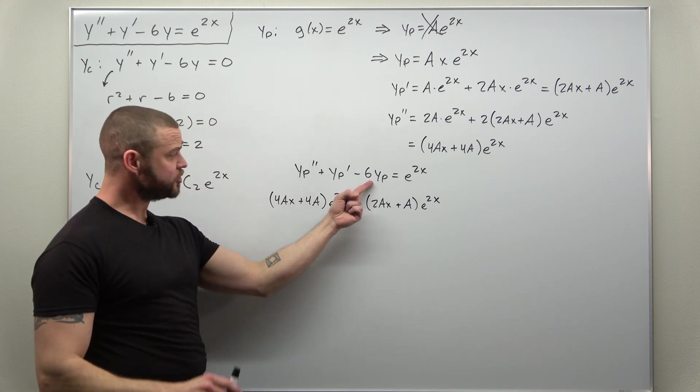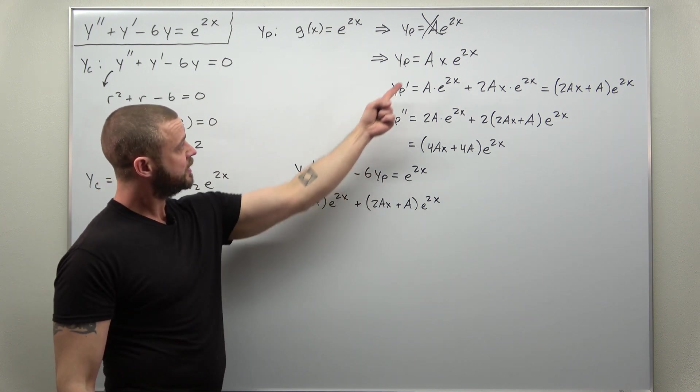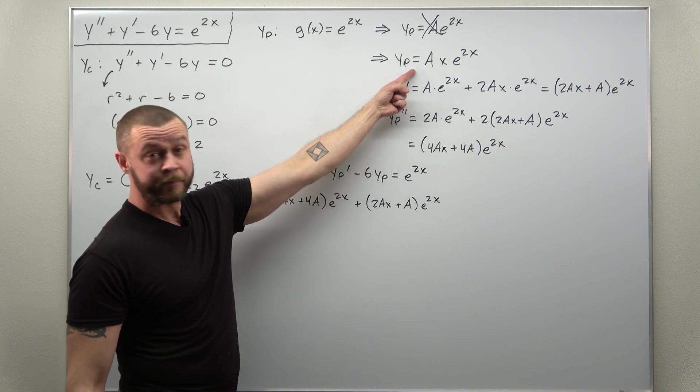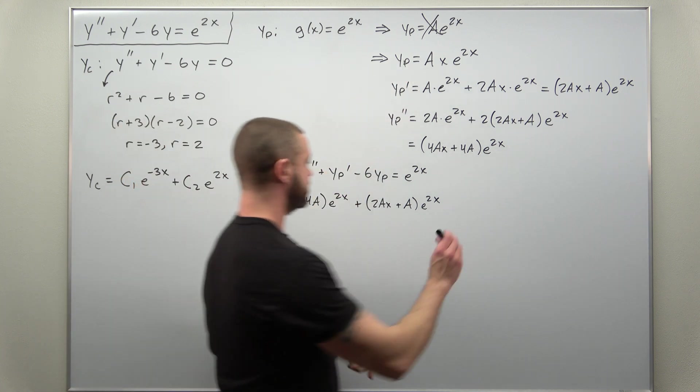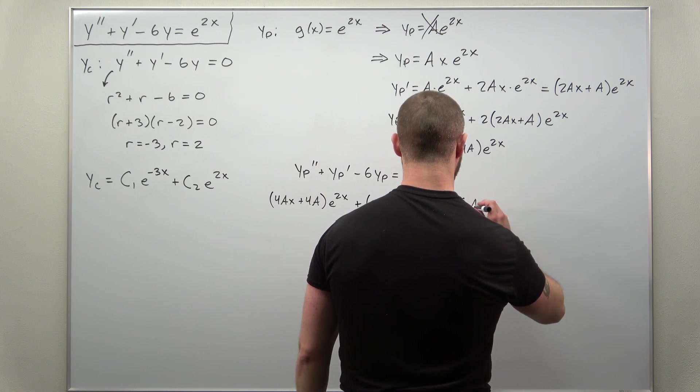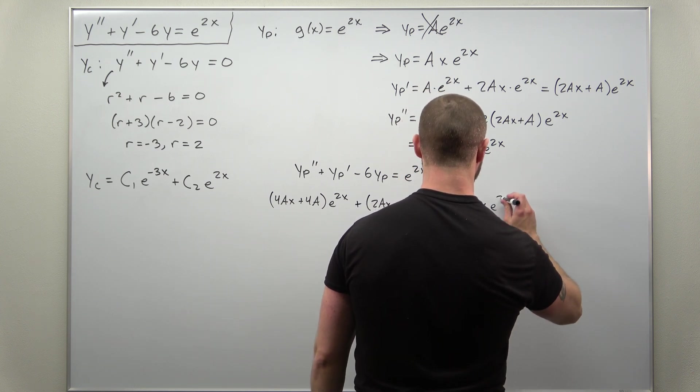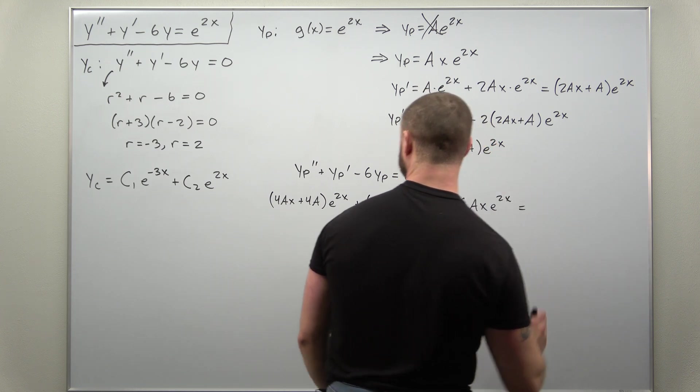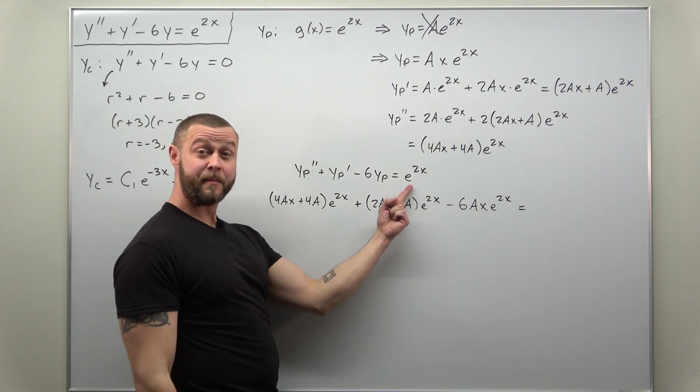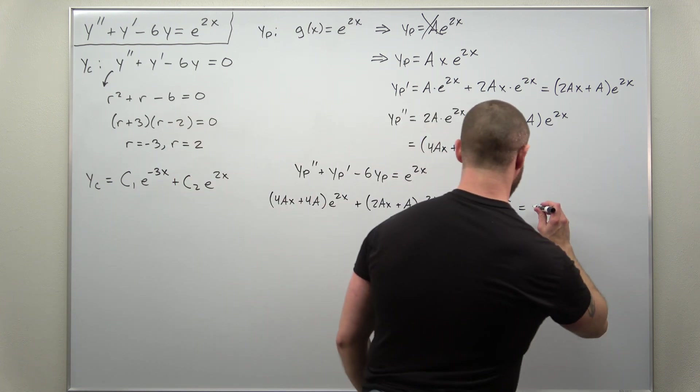And we go to now the function term minus 6 times our yₚ. So we get -6Axe^(2x). And we want that to come out to equal e^(2x).